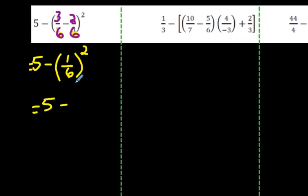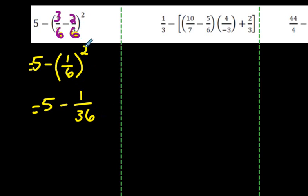5 minus what is 1 sixth times 1 sixth? To multiply a fraction by itself, it's like saying 1 times 1 is just 1, and 6 times 6 is 36. Or you could say that little exponent 2 goes here: 1 to the power of 2 is just 1, and 6 to the power of 2 is 36.